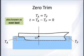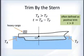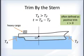For zero trim, the draft forward and draft aft are equal — this is called even keel. Trim is defined as: t = draft aft − draft forward. Trim by the stern is often defined as positive trim.